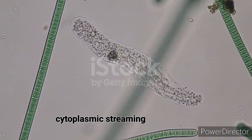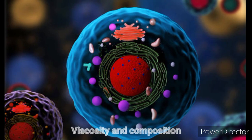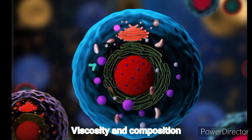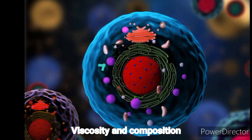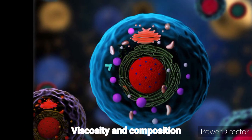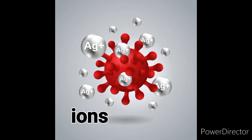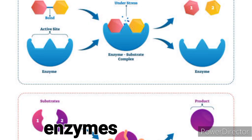and other substances throughout the cell. Viscosity and composition. The cytoplasm's viscosity can vary depending on the cell type and the specific functions it needs to perform. It contains various dissolved ions, enzymes, nutrients, and waste products crucial for cellular metabolism.